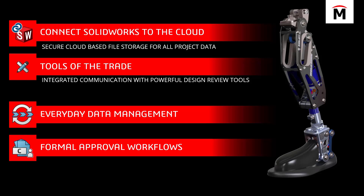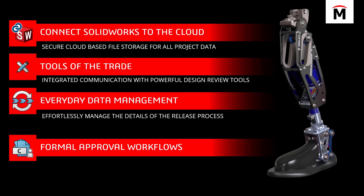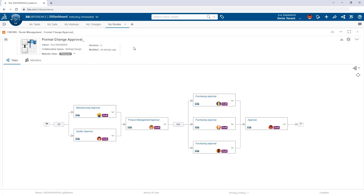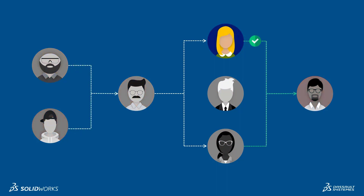For everyday data management you don't have to use tasks or markups — just work in the task pane, save your files, bump their revision, and set them to released when done. But for more complex organizations, there are formal approval workflows. What you're seeing here is a route template — the path a file needs to take through approvals. These can be set up in serial or in parallel, and in parallel you can require both users to approve, or just one.